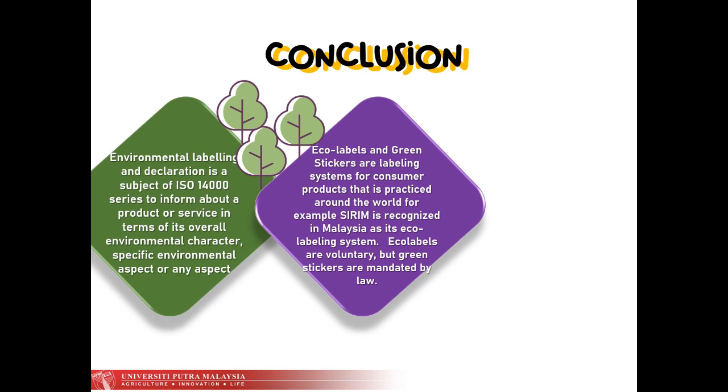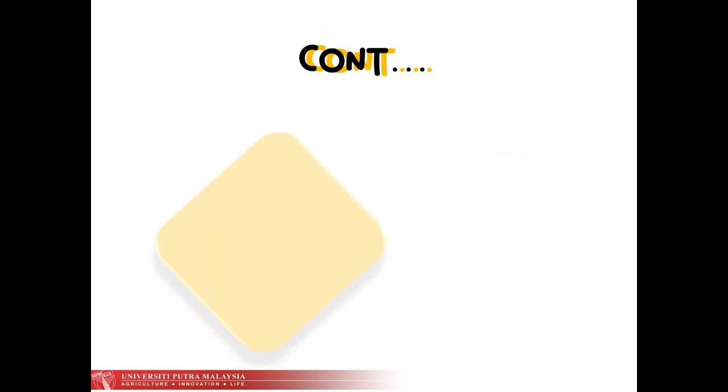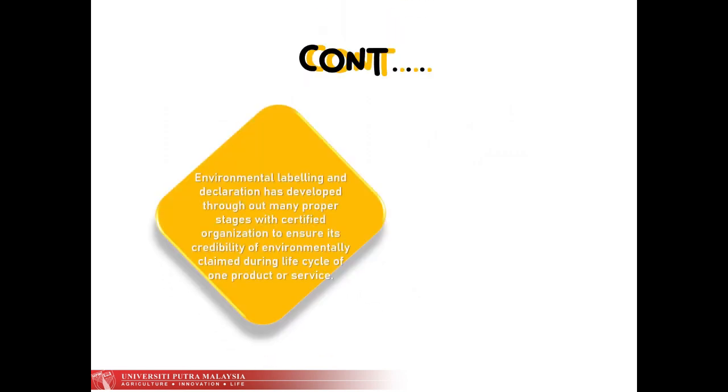Ecolabels are voluntary but green stickers are mandated by law. As specified in ISO 14025 Type 3, Environmental Product Declaration EPD quantifies environmental information on the life cycle of a product to enable comparisons between products fulfilling the same function. Environmental Labeling and Declaration has developed through many proper stages with certified organizations to ensure credibility of environmental claims during the life cycle of one product or service.